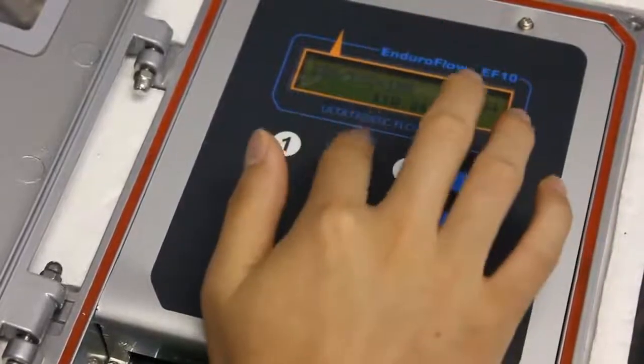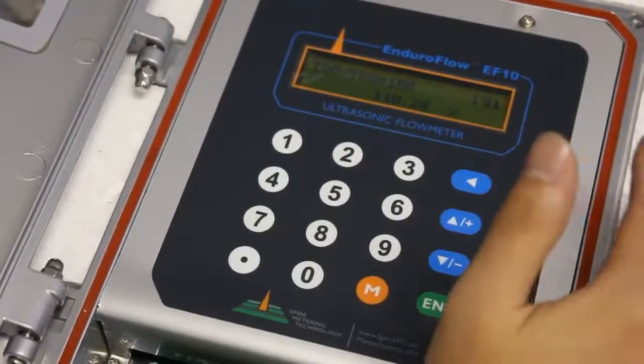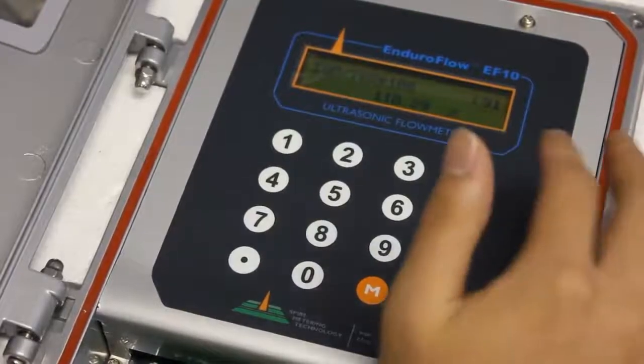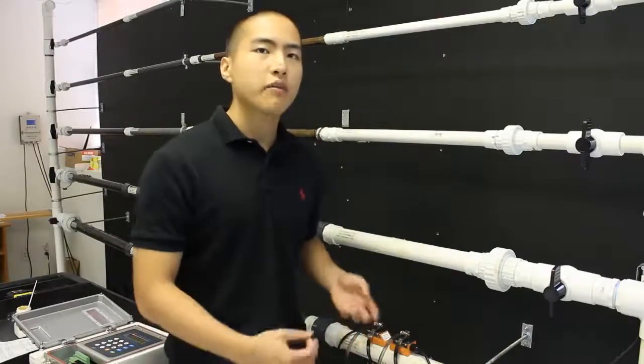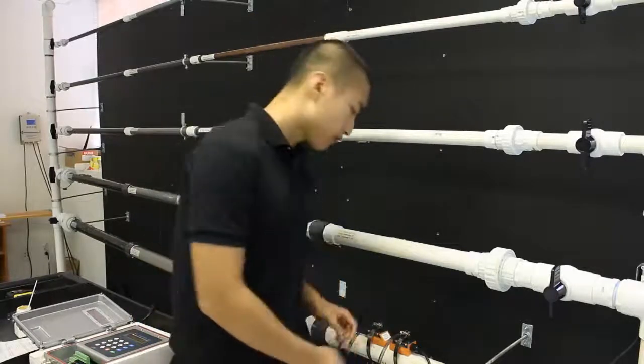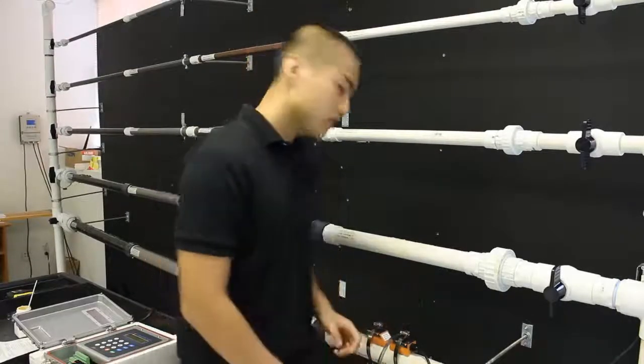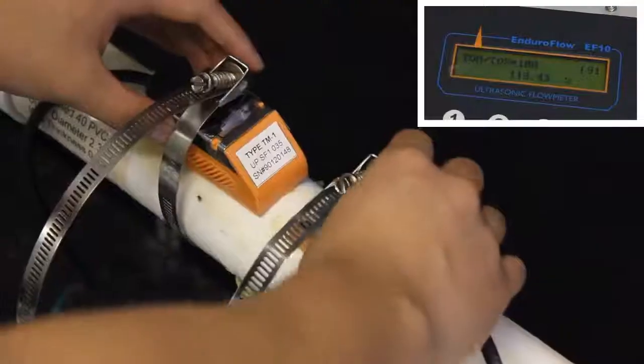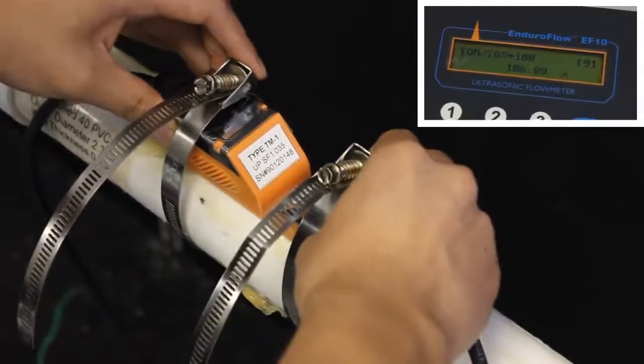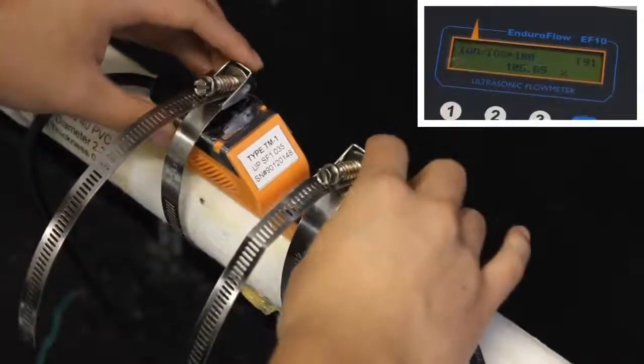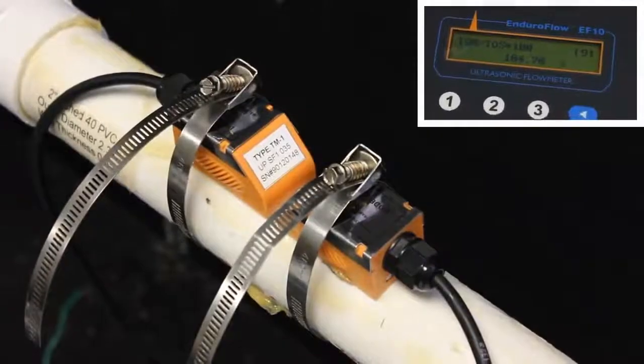At 118 it's way too high, which means we need to adjust the spacing between our transducers to change the value here. Because the value we had on menu 91 was too high, what that means is we need to move our transducers closer to each other. Now if your value is too low, then that means your transducers are too close and you need to move them farther apart. So here we're just going to move them a little closer. Basically you just keep adjusting them until it's as close to 100 as possible.